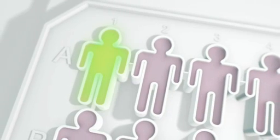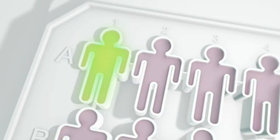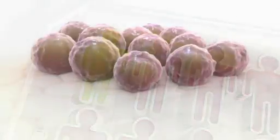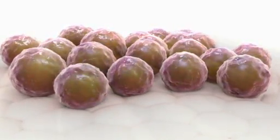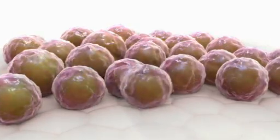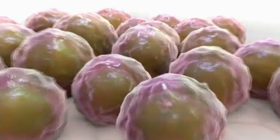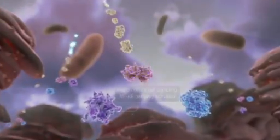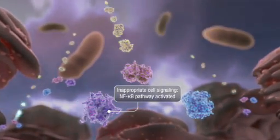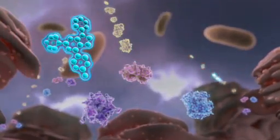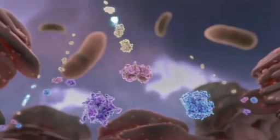Have you ever wondered how cancer drugs are developed? This video provides a brief overview of how bioluminescent research tools can be used in drug discovery. The uncontrolled growth of cancer cells is typically caused by genetic mutations that result in the inappropriate activity of proteins important for cell signaling. Cancer drugs often act by blocking that inappropriate activity.